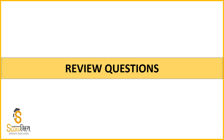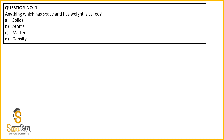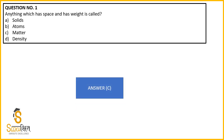Let's begin with our first question. Anything which occupies space and has weight is called what? The options are: solids, atoms, matter, or density. The answer is C — matter. Anything which has space and has mass or weight is called matter.